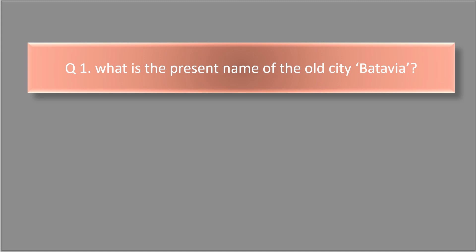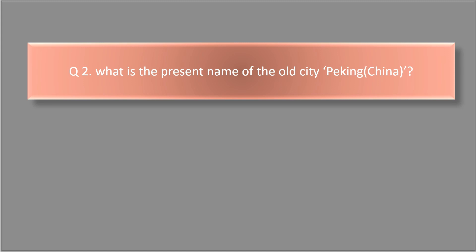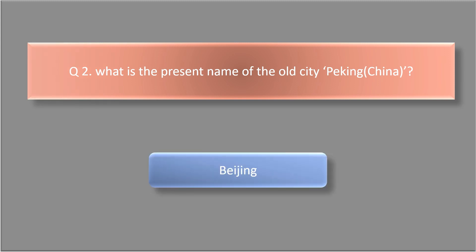What is the present name of the old city Batavia? The answer is Jakarta. What is the present name of the old city Peking? The answer is Beijing.